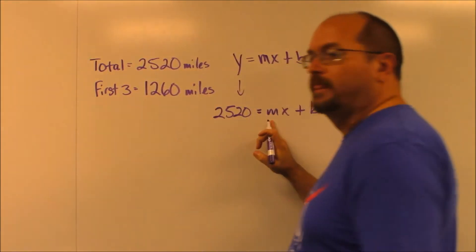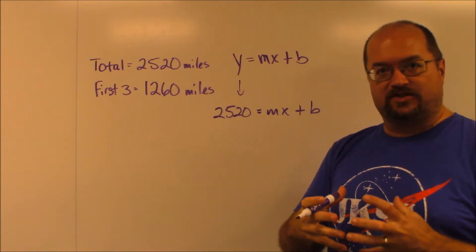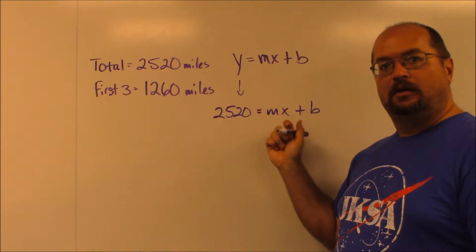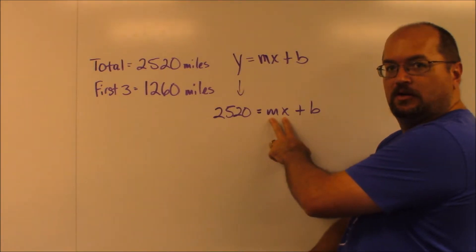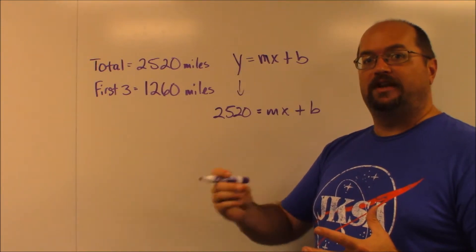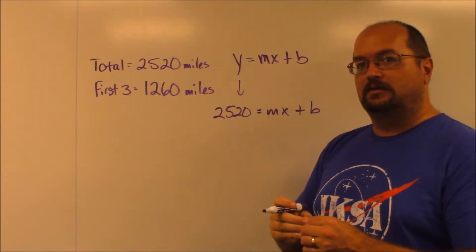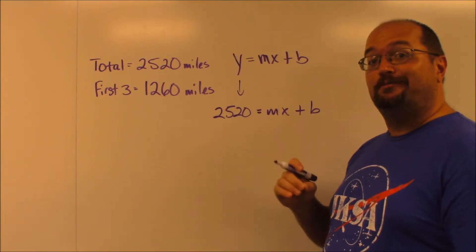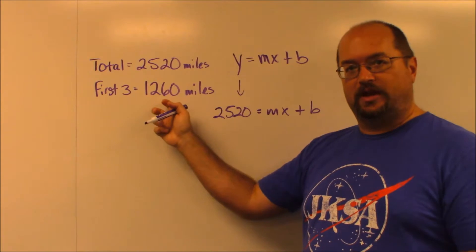Now m is the rate — m is always the rate of change, or eventually we'll see it as the slope on certain lines when we graph those lines. It's how much x is changing with each interval of x. In this case, we have to think about what this equation is really trying to figure out — the number of days if they're traveling at a certain speed per day. The speed they're traveling in the first three days is their rate, that's how x is changing. And x in this case will actually be our number of days, because that's ultimately what we're trying to figure out.